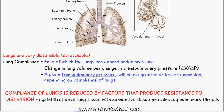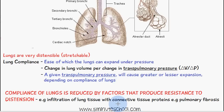The compliance of the lungs is reduced by factors that produce resistance to distension or stretchability. An example of this is infiltration of the lung tissue with connective tissue proteins, as in the case of pulmonary fibrosis. In this situation, the connective tissue proteins infiltrating the lungs prevent them from stretching as well as they normally can, so compliance is reduced.